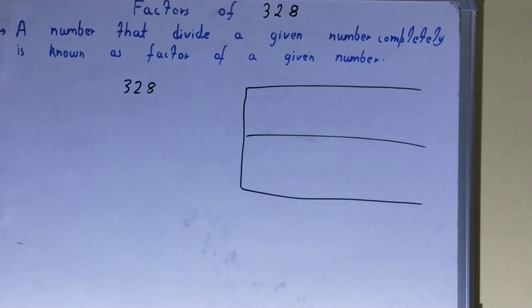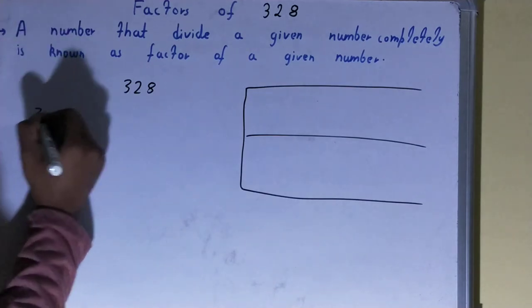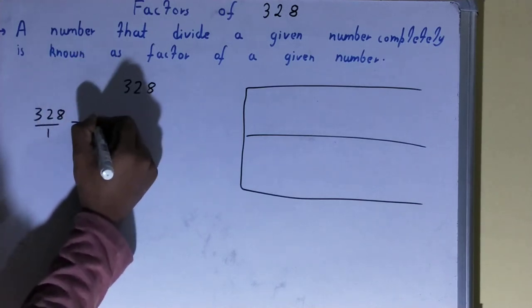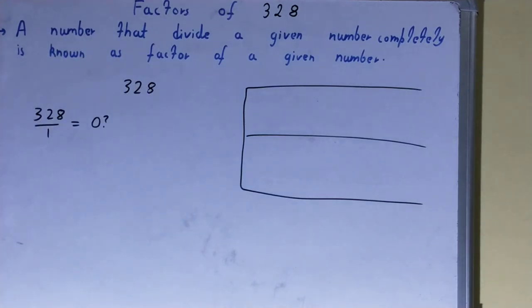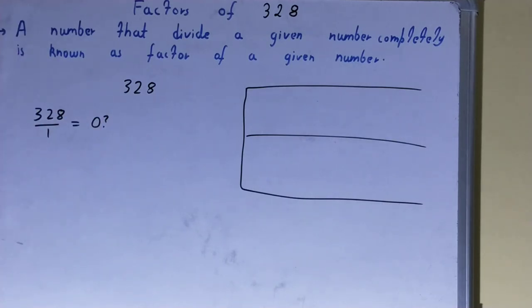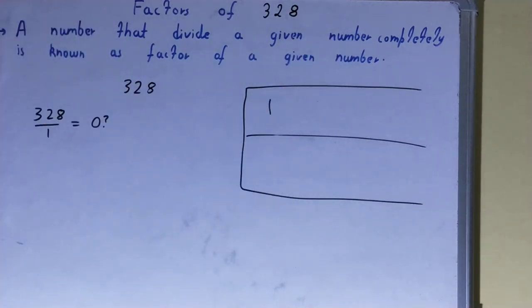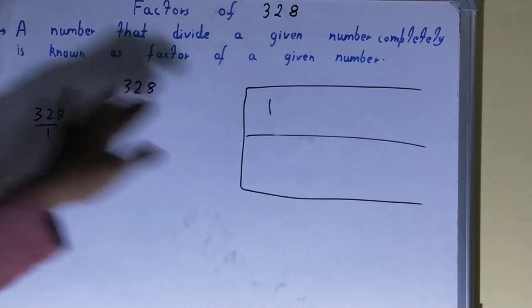You need to start with the lowest natural number, that is 1. Divide 328 by 1 — the remainder is zero, so yes, 1 is a factor of 328. We can write it in the factor list.